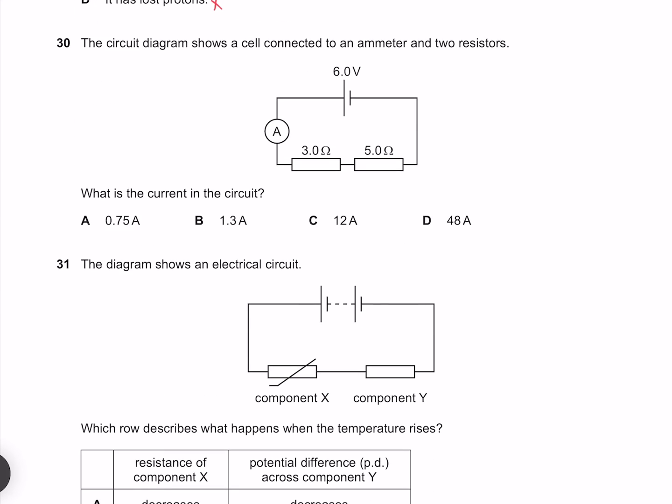The circuit diagram shows a cell connected to an ammeter and two resistors. What is the current in the circuit? Ohm's law tells us that V equals IR. Rearranging for current gives us I equals V over R. Our resistors in series add together to give us a total resistance of 8 ohms. Therefore our voltage of 6 divided by 8 gives us 0.75 amps, which is option A.